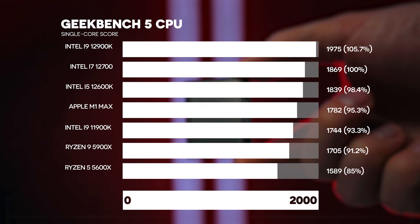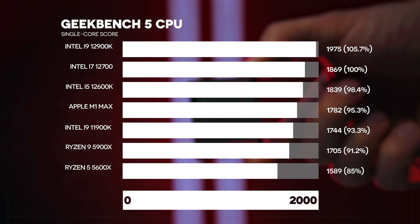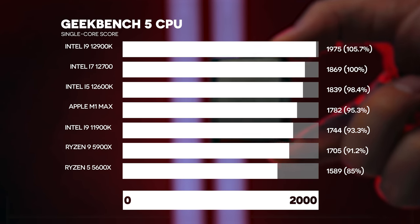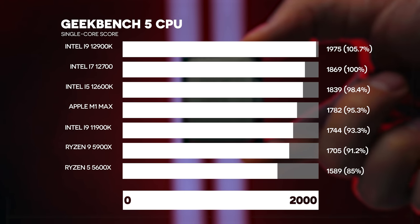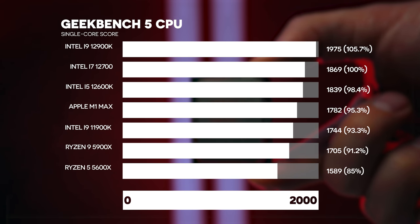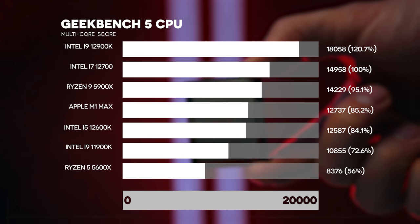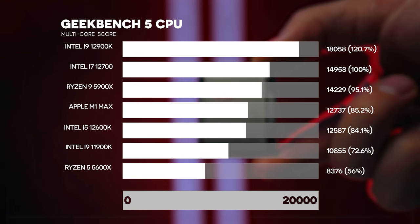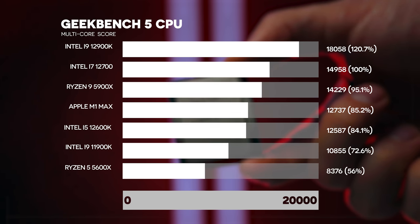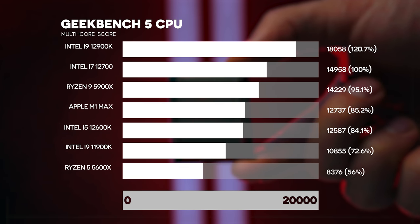Moving on to Geekbench 5, which gives us more everyday performance of the CPU. In single-core, the 12700 is about 5.7 percent slower than the 12900K, and the 12600K is only about 1.5 percent slower - so not a big difference here. Ryzen 9s are roughly 9 percent slower. In Geekbench 5 multi-core, the 12900K is 20.7 percent faster, the 12600K is about 15 percent slower than the 12700, and the 5900X is about five percent slower compared to the i7 12700.